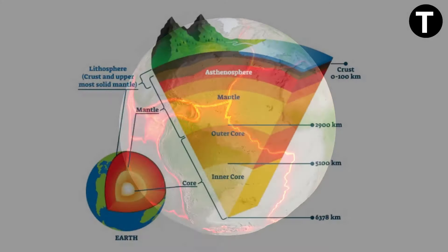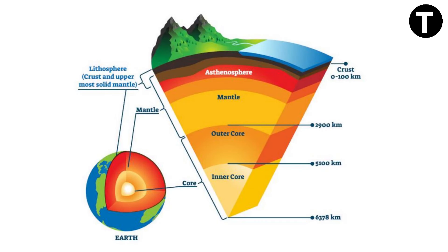To comprehend tectonic plates, we must first explore the Earth's structure. Our planet is composed of distinct layers: the innermost core, a semi-fluid mantle, and the outermost crust. The lithosphere, composed of Earth's crust — including both continental and oceanic regions — along with a small portion of the solid upper mantle, is divided into several large and small pieces known as tectonic plates.